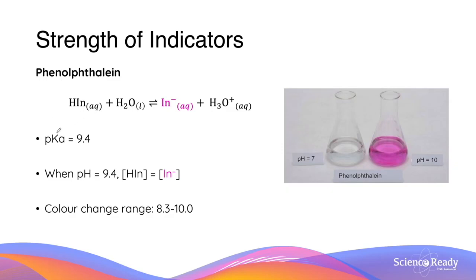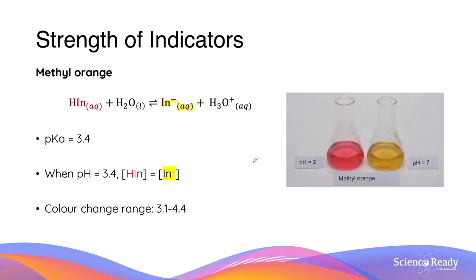When the pH equals 9.4, the concentration of the weak acid phenolphthalein and its conjugate base are equal — this is why we see the colour change range between 8.3 and 10. Methyl orange, as mentioned previously, is a stronger weak acid, which is why its pKa is low and its colour change also occurs at a low pH.